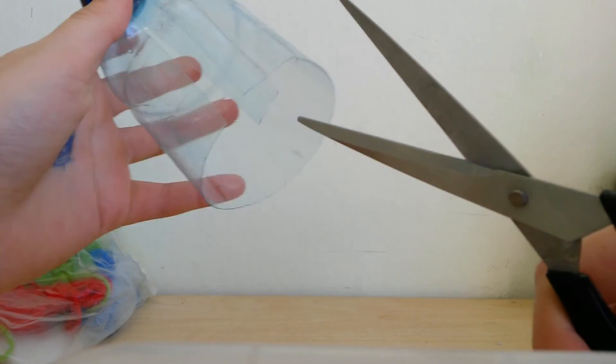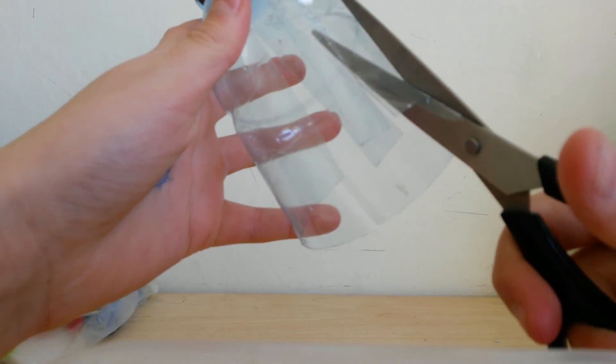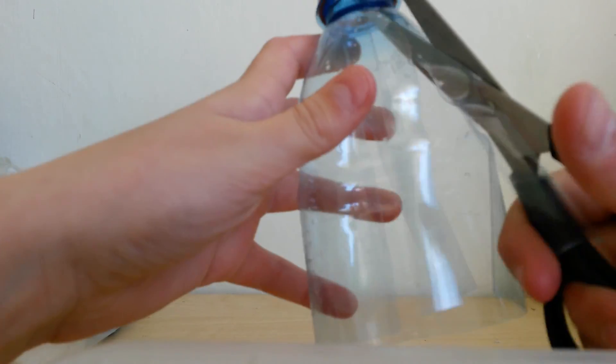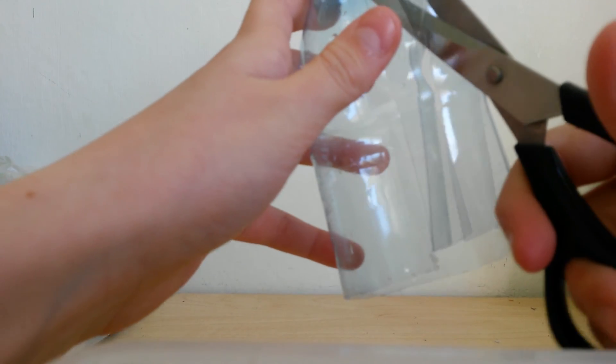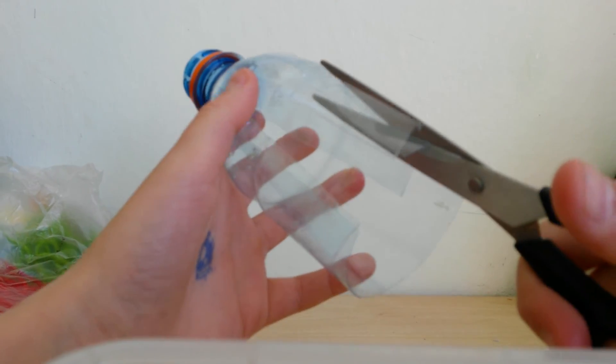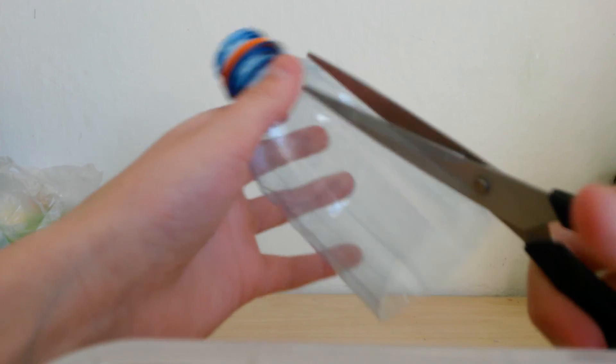What you usually do is you cut a hole in the lid and then you put a stick through it. But because I'm going to make it fast and easy, I'm going to tie it with a string.